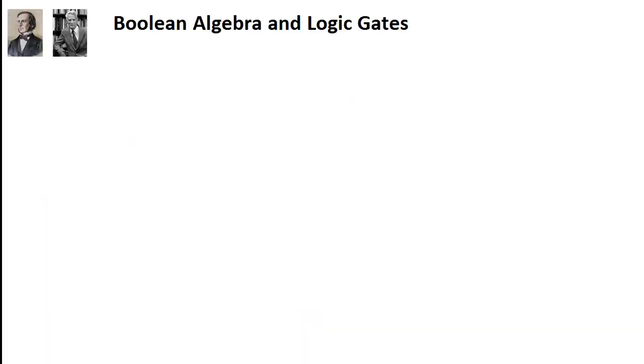Boolean algebra is a subset of algebra that deals with values of true and false, or more commonly referred to as 1 and 0. There are a few basic operations in Boolean algebra, and I'm going to outline and describe some of them, and then show the associated logic gate that can implement that Boolean algebra function in logic or in digital circuitry.